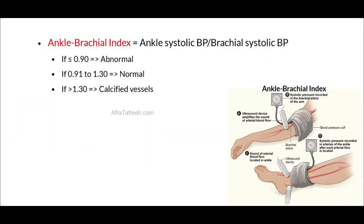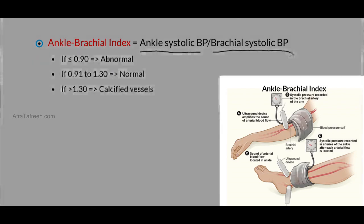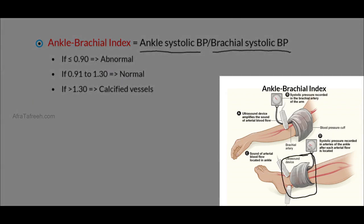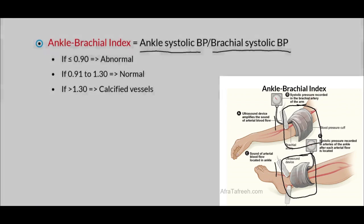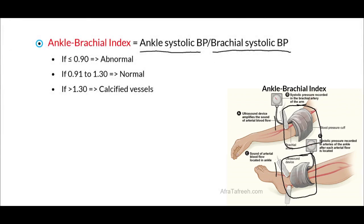We must familiarize ourselves with the ankle brachial index, or ABI. The ankle brachial index is obtained very simply by getting the systolic blood pressure of the patient's ankle and dividing that by the systolic blood pressure of the patient's brachial artery. This is done by putting the blood pressure cuff around the patient's ankle, taking the systolic blood pressure from that reading, then doing the same for the patient's brachial artery, and simply dividing the two values. We can then determine based on this ABI whether the patient has peripheral arterial disease, or PAD.